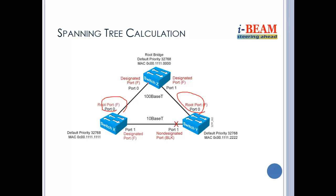Every segment has one designated port. In each segment, you select the designated port based on the lowest bridge ID. Switch X, Switch 1, and Switch 2 are compared to select the designated port.